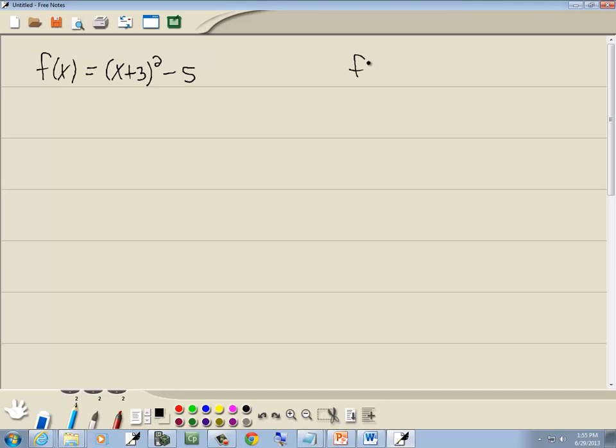Standard form is where you've got a times x minus h squared plus k. The key part of that is you've got x plus a number or x minus a number all to the second power. You may or may not have numbers here.